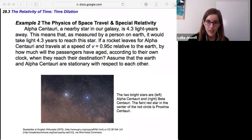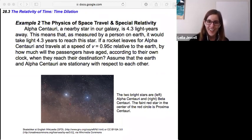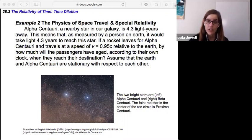Let's look at one more example. The physics of space travel and special relativity. Alpha Centauri, a nearby star in our galaxy, is 4.3 light years away. That means that as measured by a person on Earth, it would take light 4.3 years to reach this star. If a rocket leaves for Alpha Centauri and travels at a speed of V equals 0.95 c relative to the Earth, by how much will the passengers have aged according to their own clock when they reach their destination? Assume that the Earth and Alpha Centauri are stationary with respect to each other. So there's a bit of interpretation here. And that we first have the speed that the rocket's traveling at, 0.95 c. That's already in a great form.